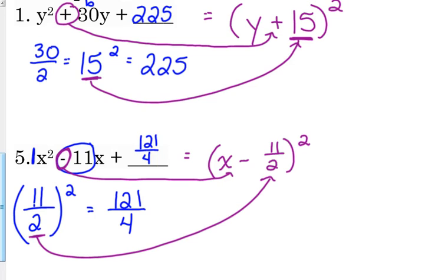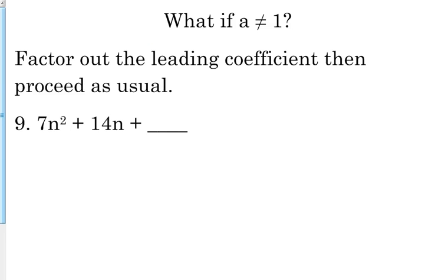So let's just practice with that part. What if a doesn't equal 1? We know that that comes up a lot. It's very rare that your a is actually 1 because those are very simple problems. So what happens if they put, you know, for example, a 7 in there? Well, all we have to do is factor out our leading coefficient, and then we're going to proceed as we normally do.